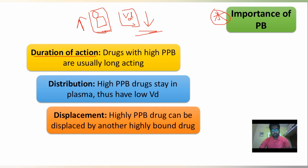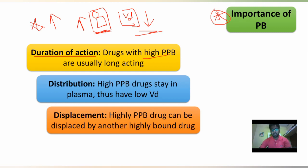If the protein binding capability of the drug is high, then the duration of action will also be high. High plasma protein binding drugs will have a longer duration of action, and they will stay more time in the plasma — that's why they have a low volume of distribution.